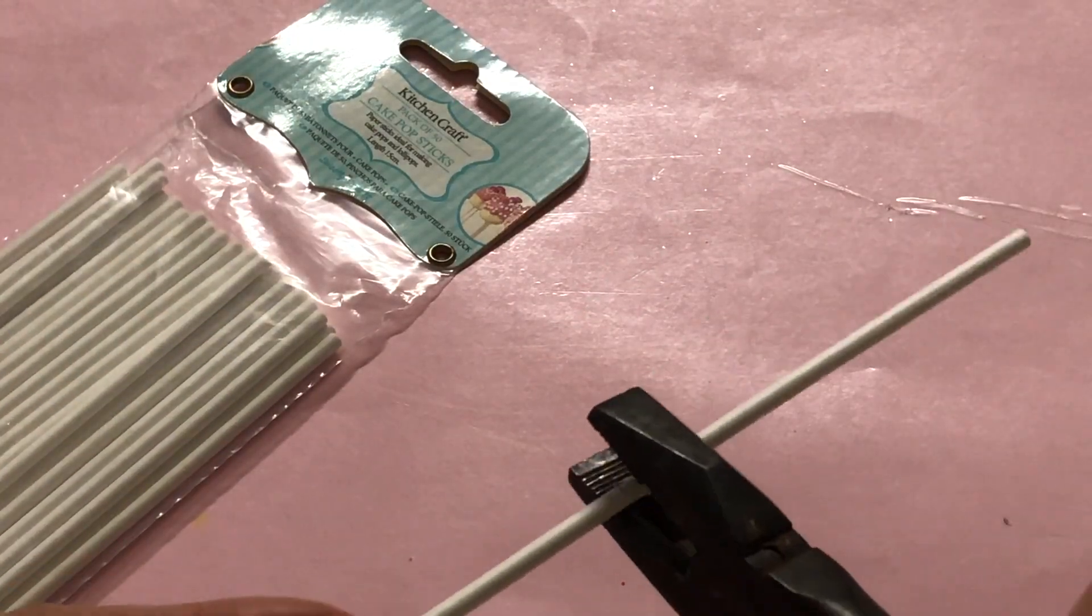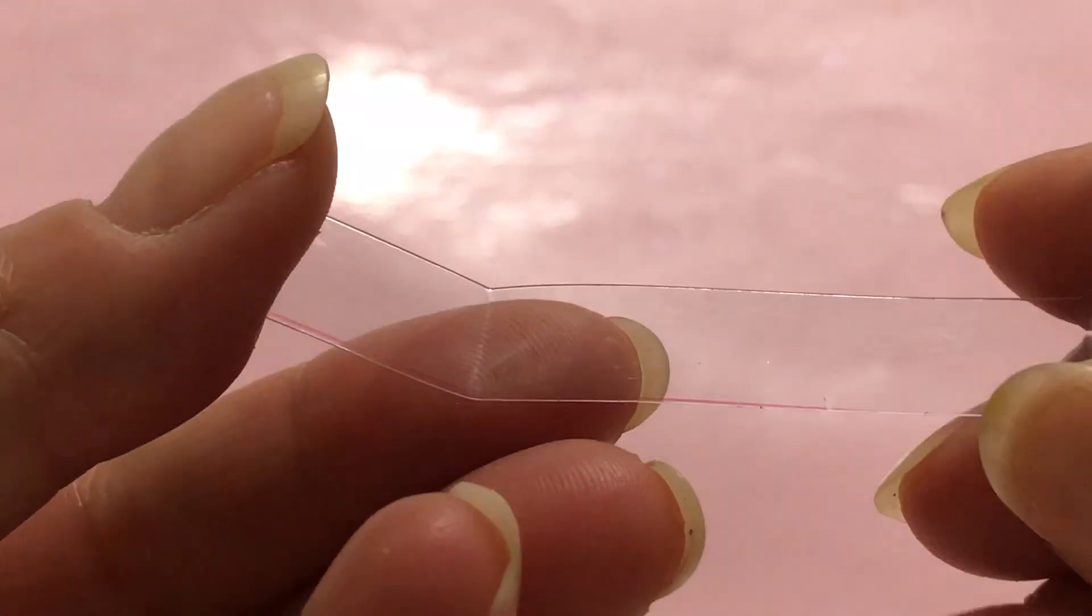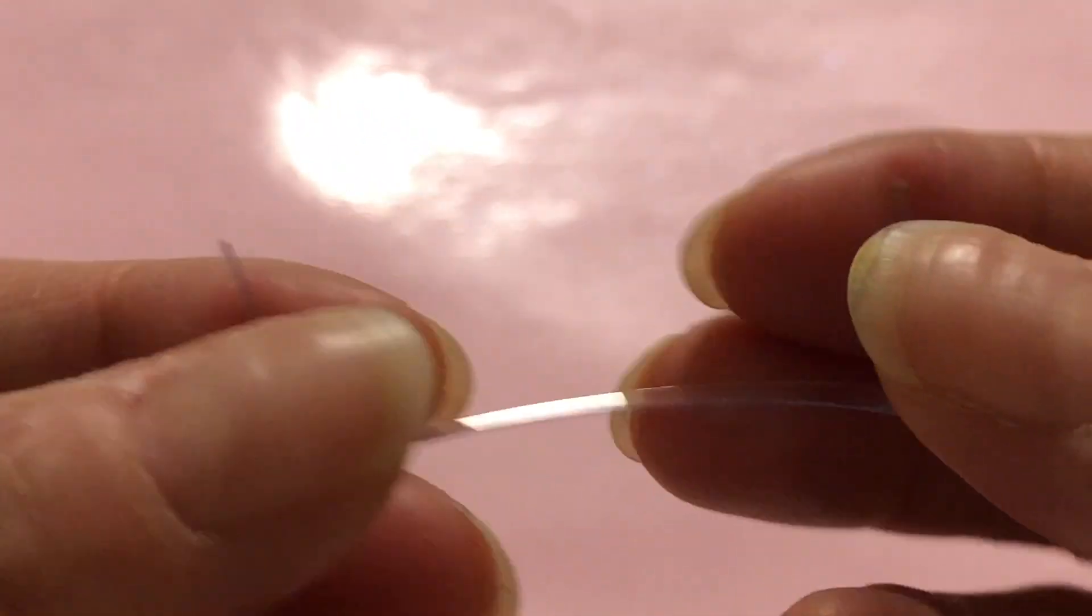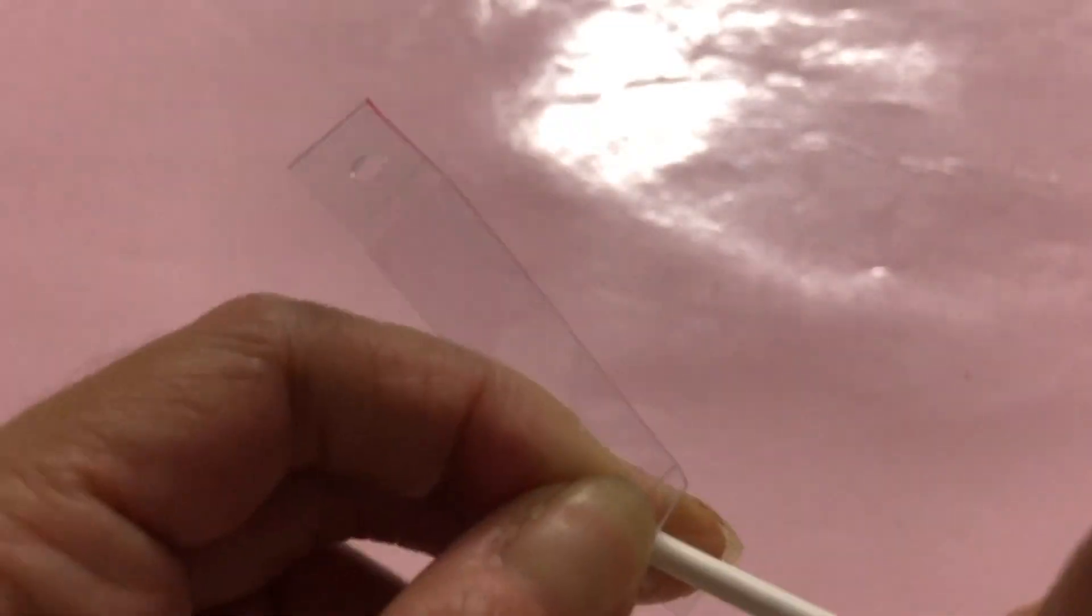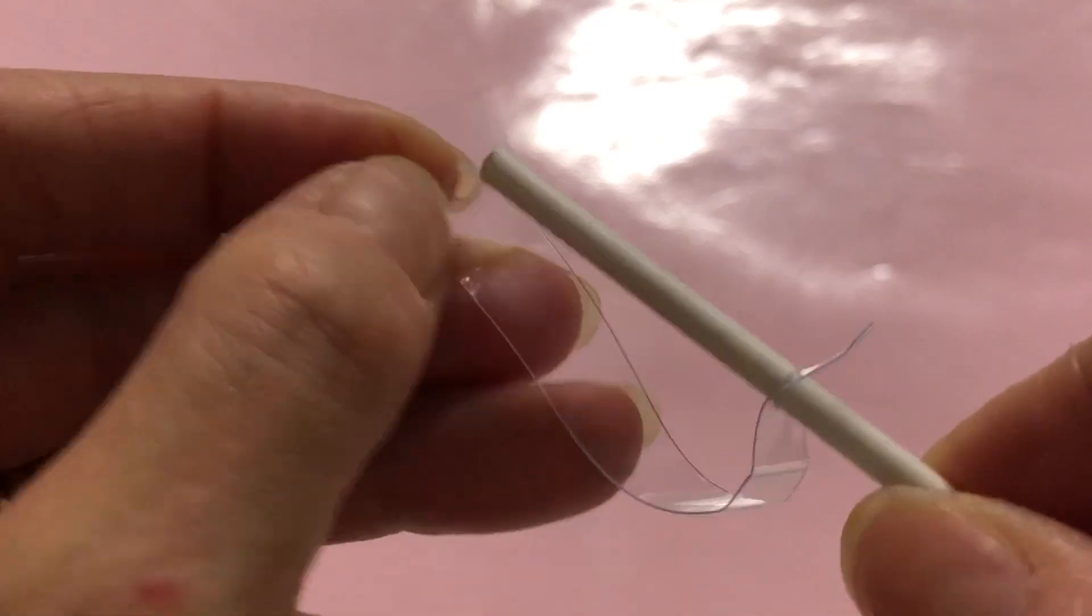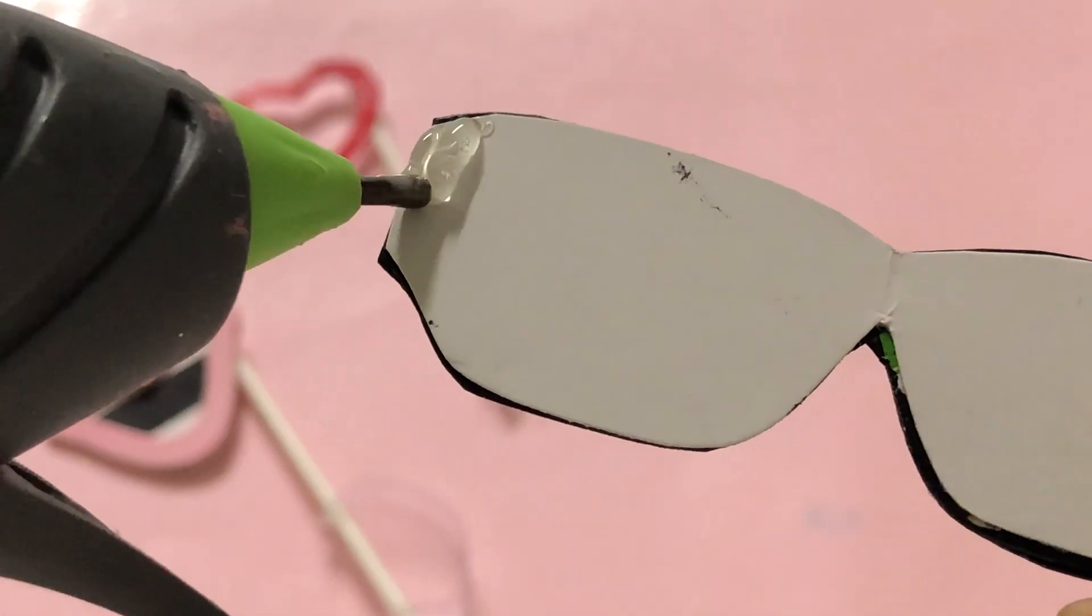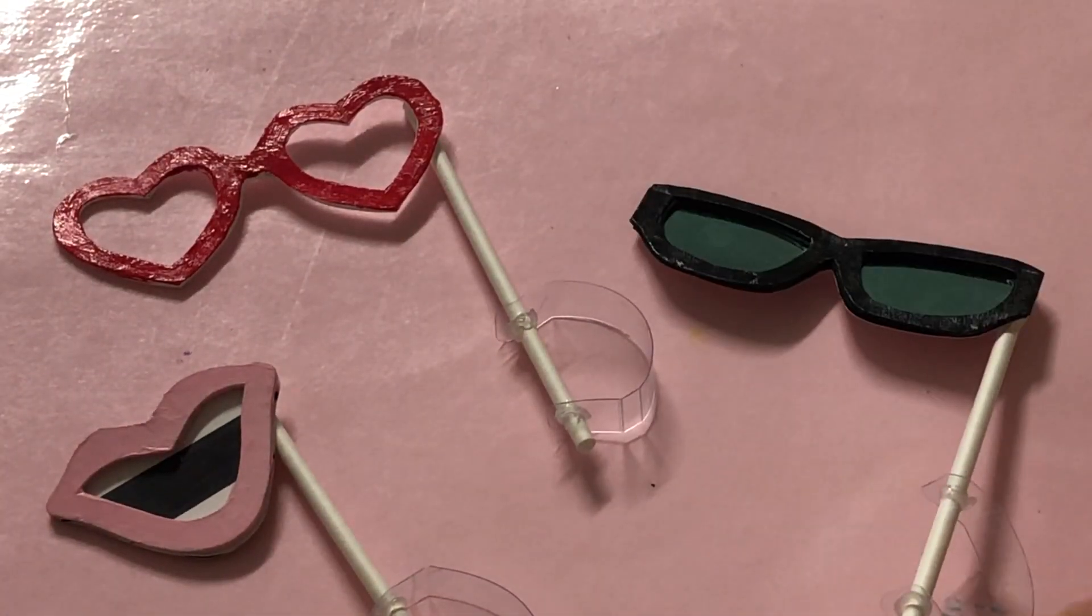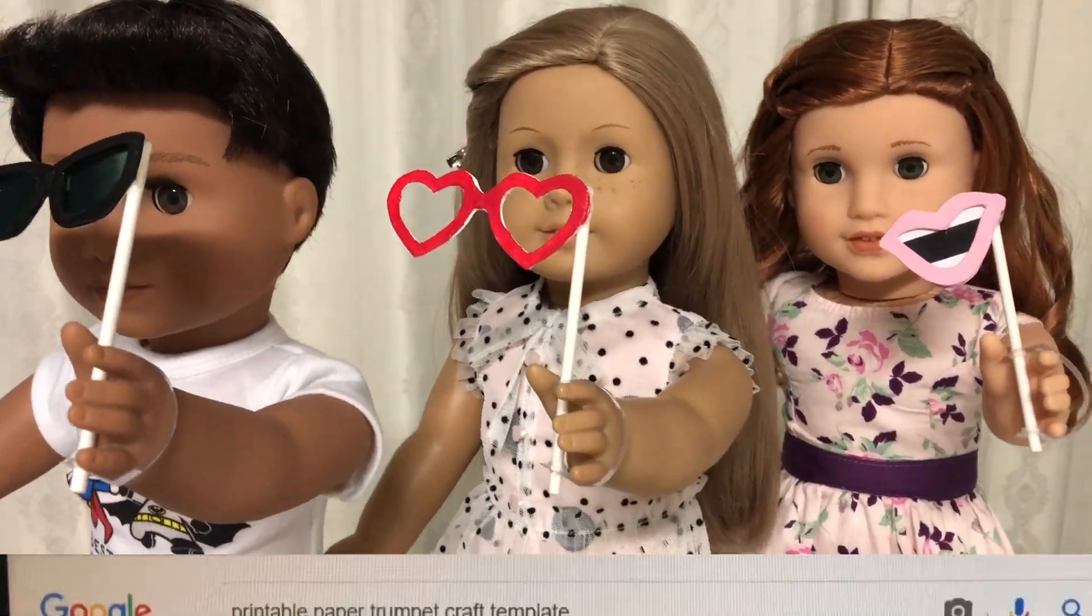So our dolls can hold these props, we cut cake pop sticks down to nine centimeters. The hand grip is just a seven centimeter strip of thick plastic packaging. Bend one centimeter tabs at both ends. Use a brad punch to make holes in the center of the tabs. Feed the cake pop stick through the holes, making a curve in the plastic perfect for our dolls' hand. To attach the stick, draw a line of hot glue on the back side of your prop. Fantastic, they are ready for our dolls to use.